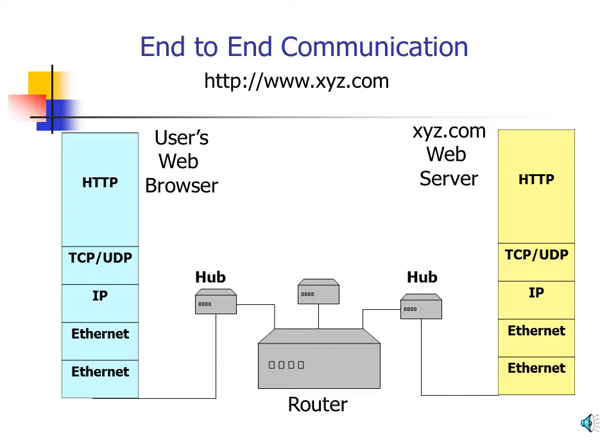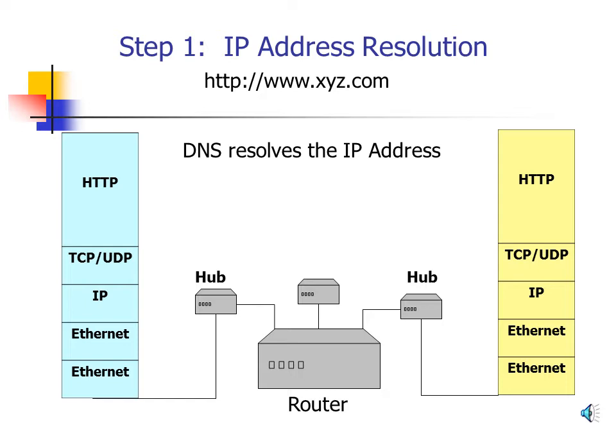Step 1: IP Address Resolution. The user has typed www.xyz.com into the web browser, but before TCP/IP can connect to another server, the computer must get the IP address of the destination computer — and for that it uses DNS. The TCP/IP software in each machine has a special DNS program called a DNS resolver, and that resolver sends a request to its configured DNS server for the IP address of www.xyz.com.